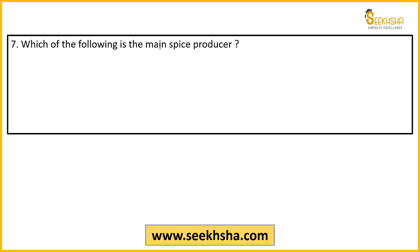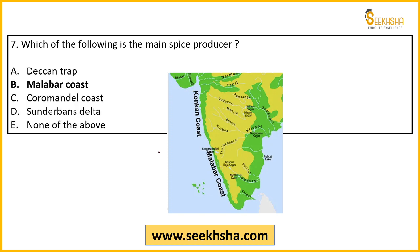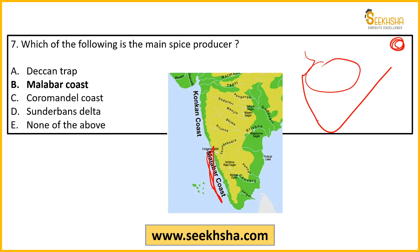Question seven: Which among the following is the main spice producer region in India? Options: A — Deccan Trap, B — Malabar Coast, C — Coromandel Coast, D — Sundarbans Delta, E — none of the above. Note that regions, not states, are given — this is a common innovation by examiners. The correct answer is B — Malabar Coast. This refers to the Kerala region. The Malabar Coast produces the largest quantity of spices, while the Coromandel Coast is in the south-east.